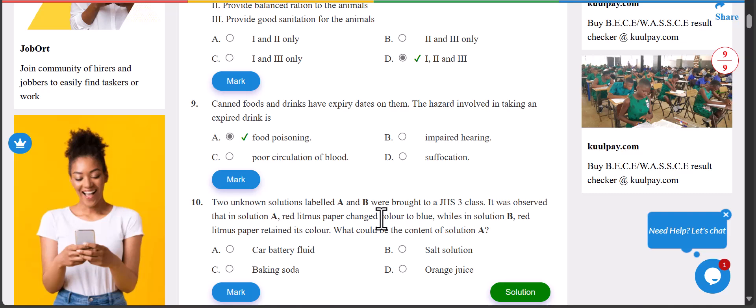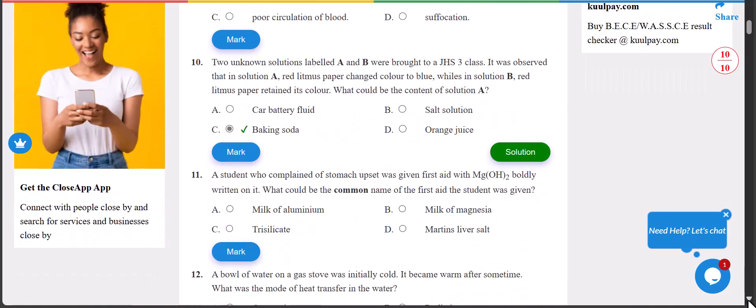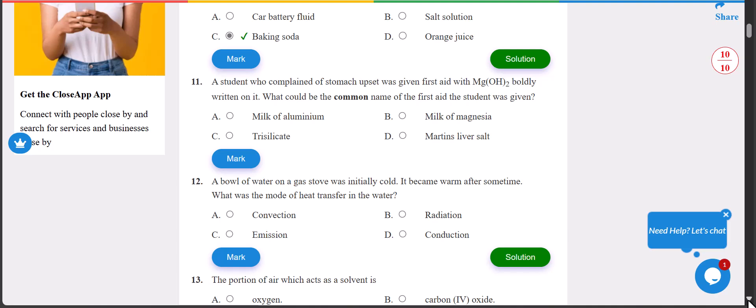Number 10: when two unknown solutions labeled A and B were brought to a GHS study class, it was observed that in solution A red litmus paper changed color to blue, while solution B retained its color. What could be the content of solution A? The answer is C - baking soda. You can try that experiment probably in the house or at school.